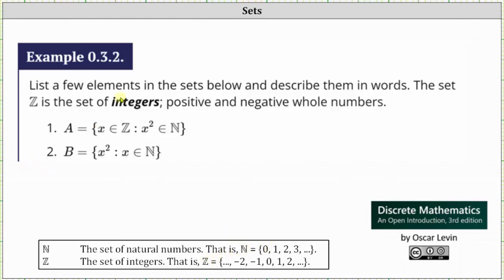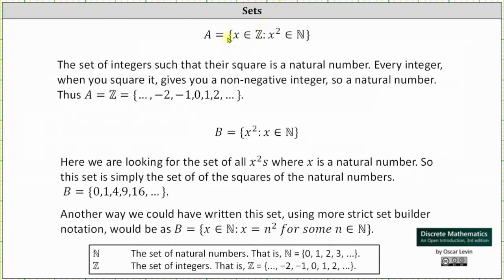Let's first consider set A. Set A is the set of integers such that x² is a natural number. If we take every integer and square it, we get a non-negative integer, which is a natural number. Therefore, set A is simply the set of integers, since squaring any integer produces an element in the set of natural numbers.